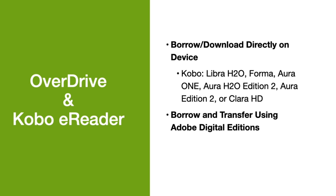In terms of Overdrive and Kobo eReaders, there are two different methods to opening Overdrive titles on a Kobo eReader. With newer Kobo models, such as Libra H2O, the Forma, Aura 1, Aura H2O Edition 2, Aura Edition 2, or Clara HD, books can be borrowed directly on the Kobo device. With other Kobo models, titles can be borrowed and transferred using Adobe Digital Editions.